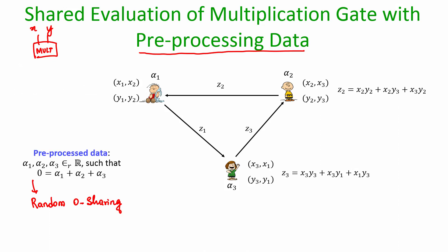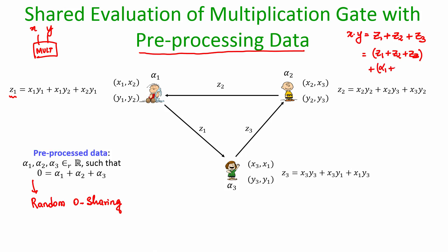We have already identified three terms Z1, Z2, Z3, and we know that X times Y is Z1 + Z2 + Z3. Now, what can we say about Z1 + Z2 + Z3 + alpha1 + alpha2 + alpha3? That will still equal X dot Y because alpha1, alpha2, alpha3 have the property that their sum produces zero.